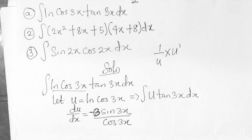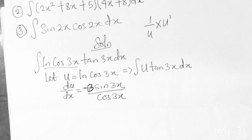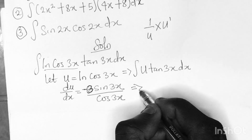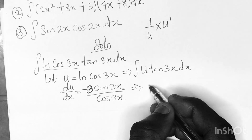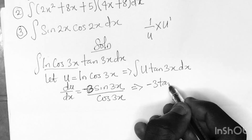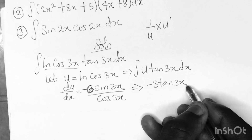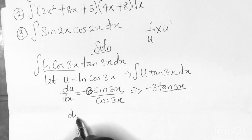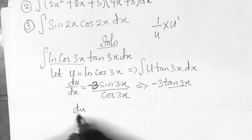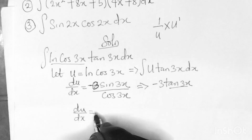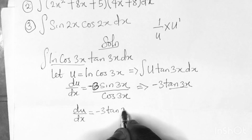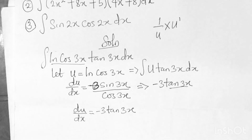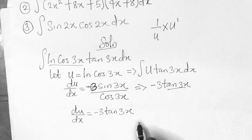We want to make dx the subject of formula. We recognize that minus 3sin3x over cos3x is the same as minus 3tan3x, because in mathematics sin/cos gives tan. So du/dx = minus 3tan3x.